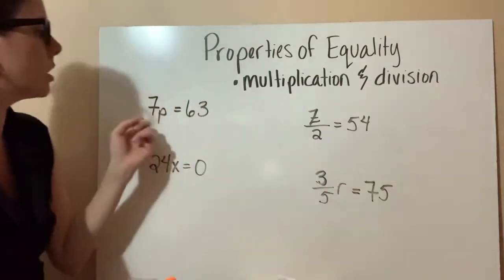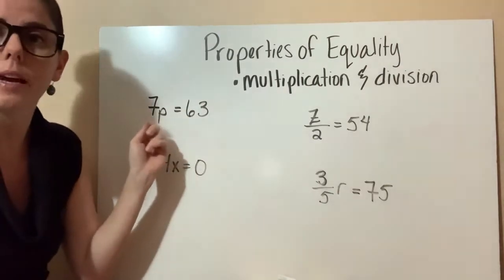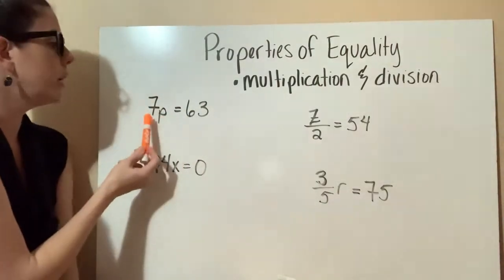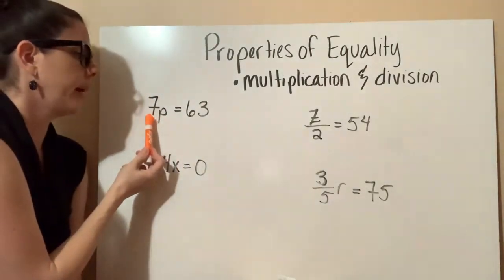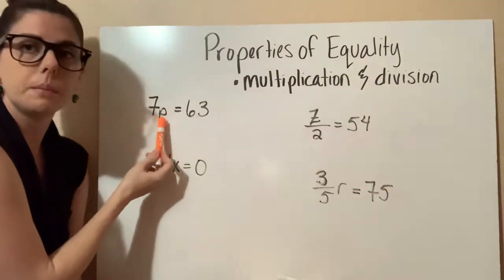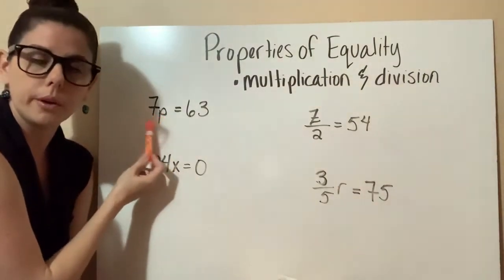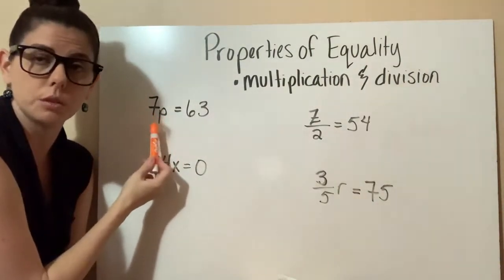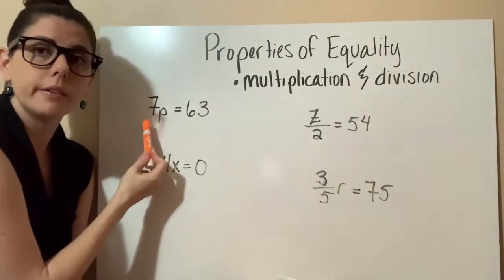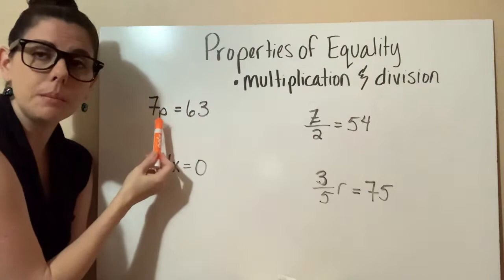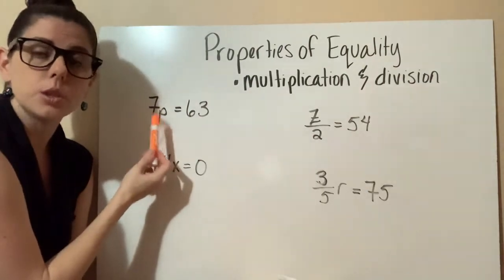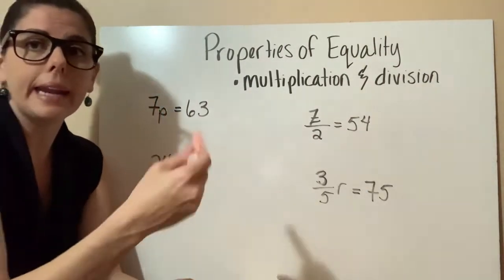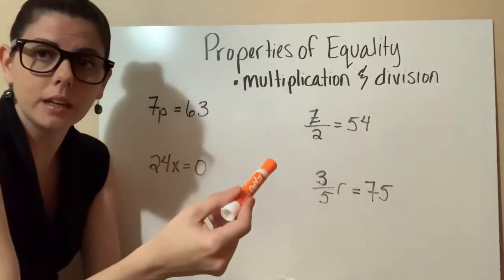To start with, we have 7p equals 63. When we look at 7p, what operation is being performed between the two? 7 times p — so that would be multiplication.